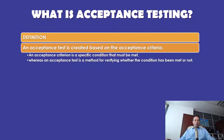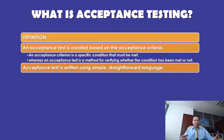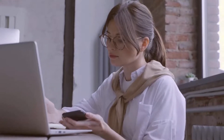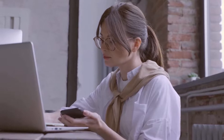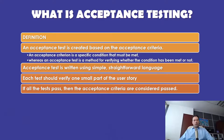Just like a user story, an acceptance test is written using simple, straightforward language. Each acceptance test should be an easy-to-understand action with a verifiable condition that the user story is implemented correctly. Each test should verify one small part of the user story, and if all the tests pass, then the acceptance criteria are considered passed.